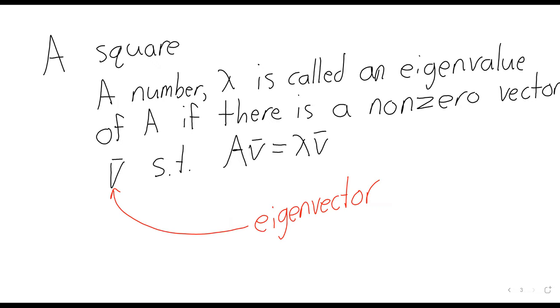The definition, when you see it, seems a little cryptic. But eigenvalues and eigenvectors are really important in differential equations. In particular, just like we solved linear homogeneous equations by looking at the roots of polynomials, we're going to solve systems of linear homogeneous equations by looking at eigenvalues. These are going to play the same role that the roots played in that previous material. Before we talk about that, we have to do some linear algebra to make sure we're all up to speed.